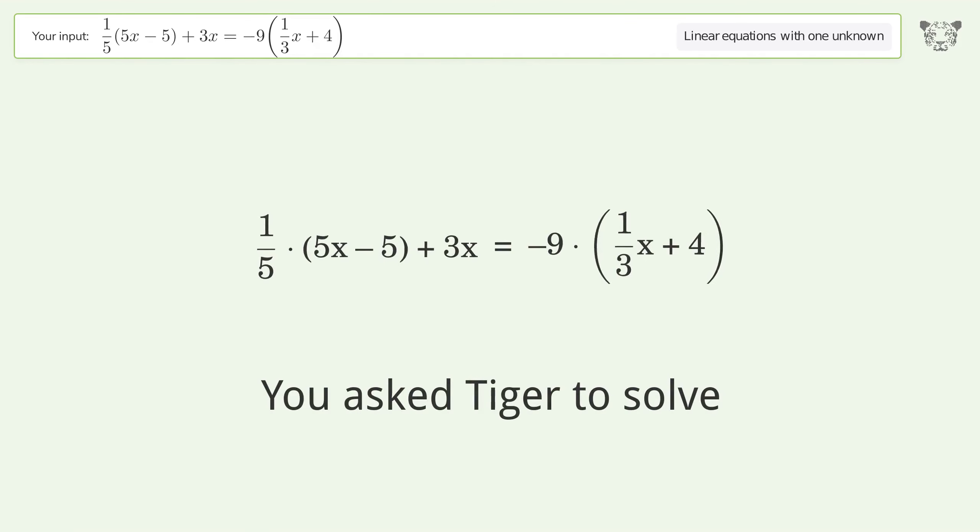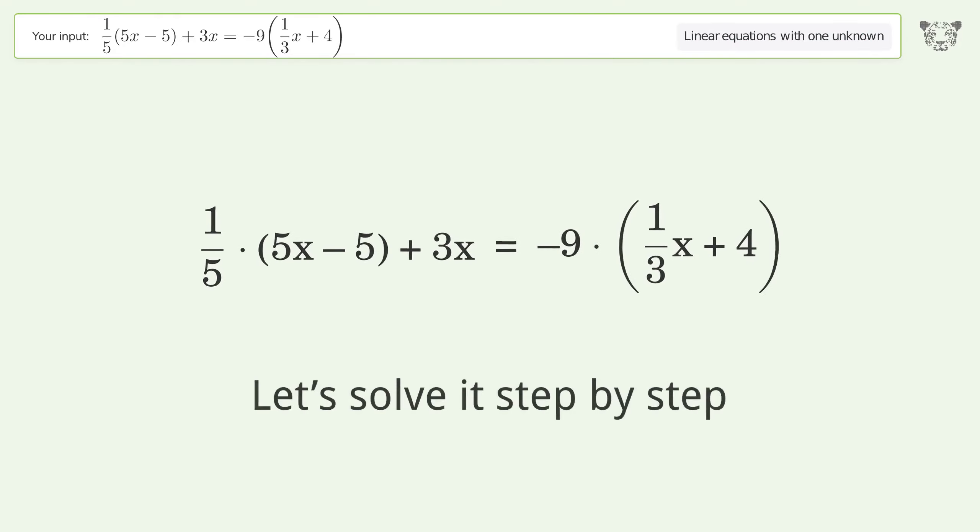You asked Tiger to solve this problem dealing with linear equations with one unknown. The final result is x equals negative 5. Let's solve it step by step.